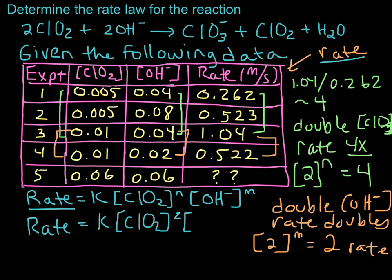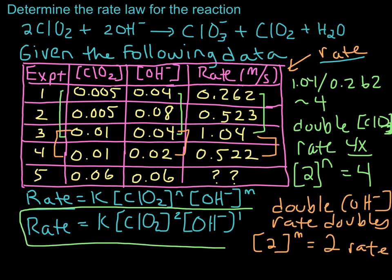Let's add that to our rate law. The rate equals K times [ClO₂]² times [OH⁻] to the first power — though we typically just write [OH⁻] without the explicit 1. This is the complete rate law for this reaction. In the next video, we'll use this rate law to figure out the value for the rate constant.